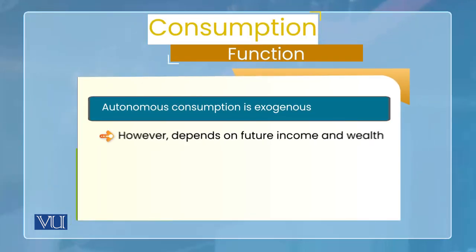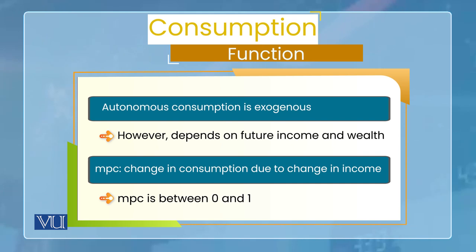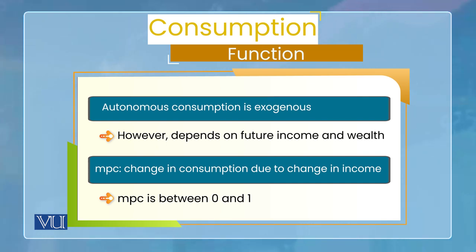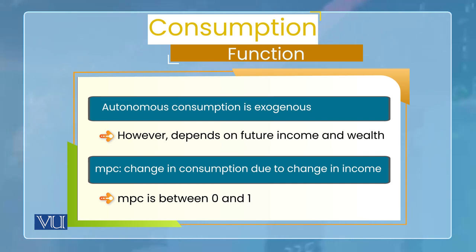So autonomous expenditure means the part of expenditure that is independent of current income — यानि कि वो income पे depend नहीं करता। Income ना भी हो, तब भी इतना expenditure का part होता ही है। तो फिर यह किस पे depend करता होगा? यह wealth पे depend कर सकता है, यह future income पे depend कर सकता है — तो इसके अपने determinants हैं, लेकिन यह current income पे dependent नहीं होता। लेकिन जो उसका दूसरा part है, जो MPC × YD है — this is the part of consumption which is induced by disposable income।